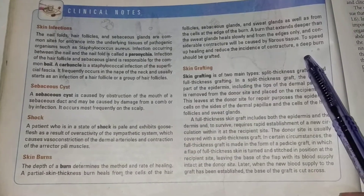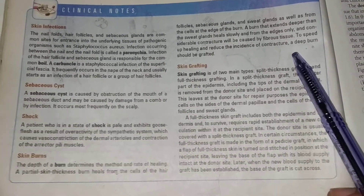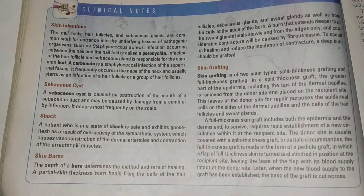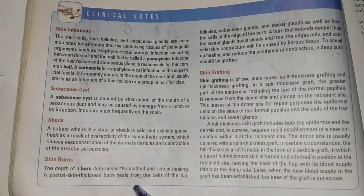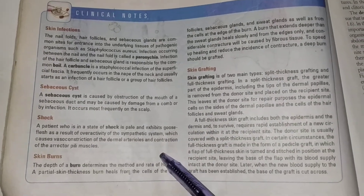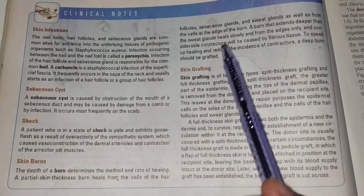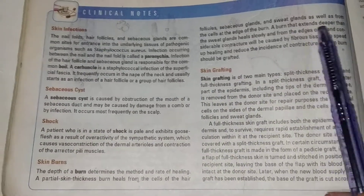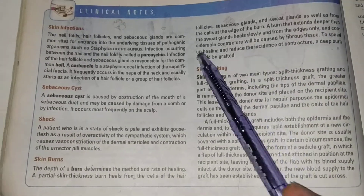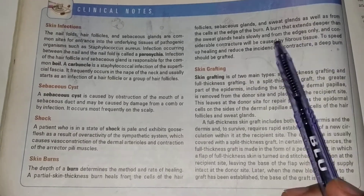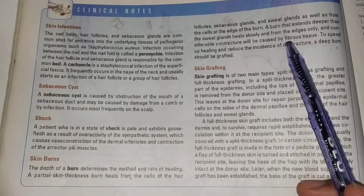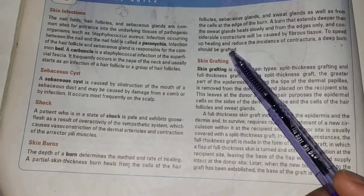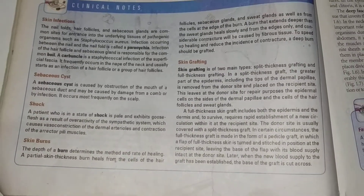To speed up healing and reduce the incidence of contraction, a deep burn should be grafted. If we have a partial skin thickness burn, the hair follicles, sebaceous glands, and sweat glands will aid healing at the edges. When the burn is deeper than the sweat glands, healing is slow and fibrous tissue forms, so a skin graft is needed.